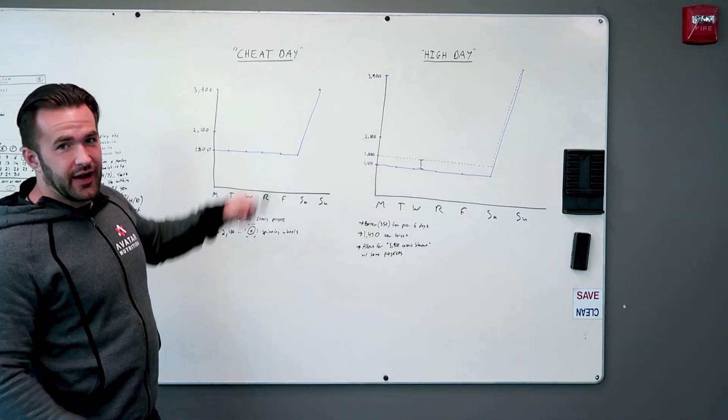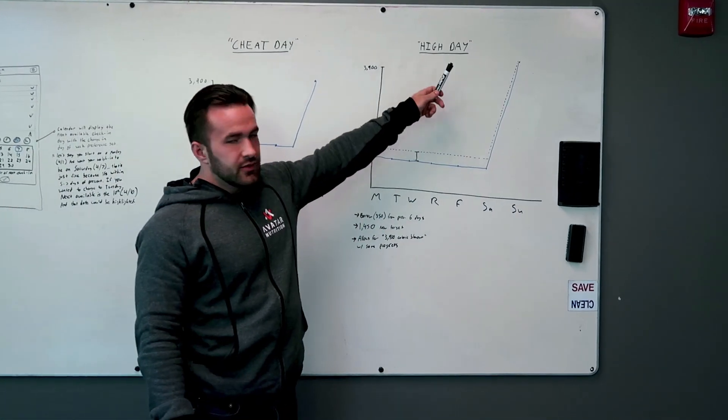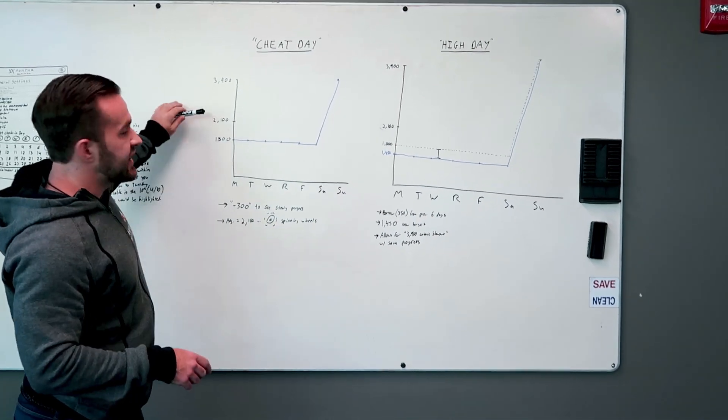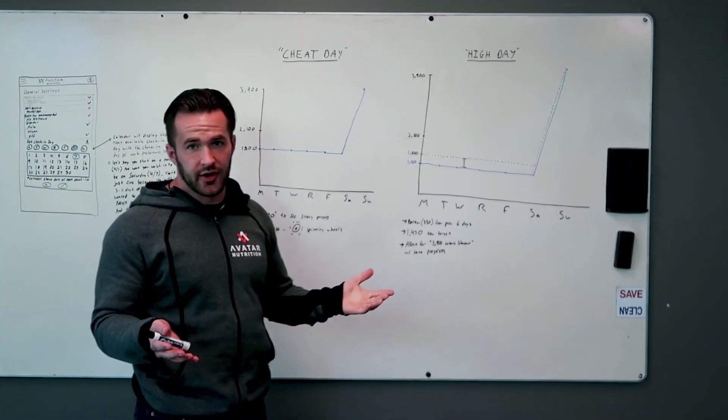One, we have a week where you're having the cheat day logic, and the other, we're using high day logic. So let's say for a pretend person that they maintain their body weight on 2,100 calories.